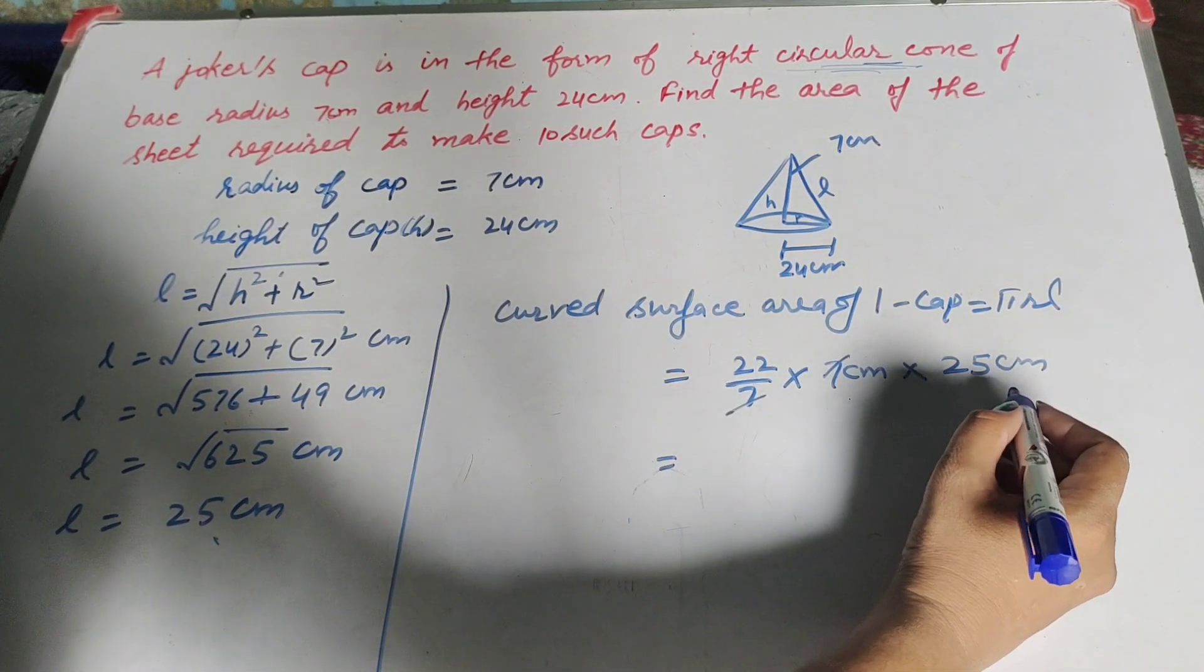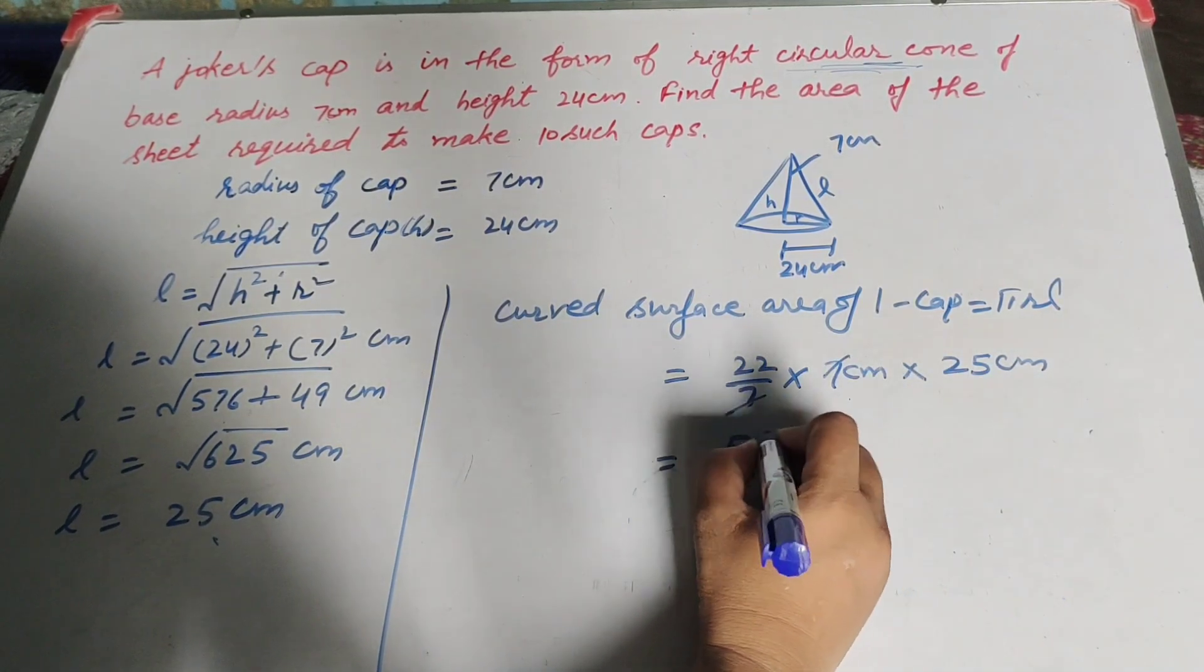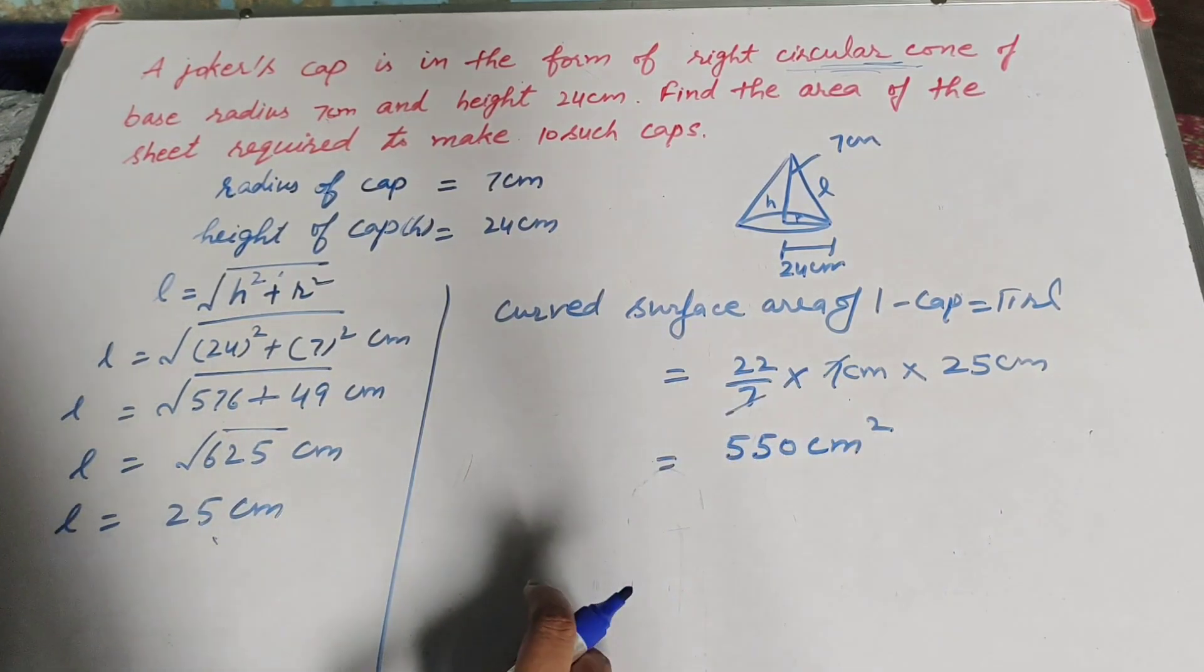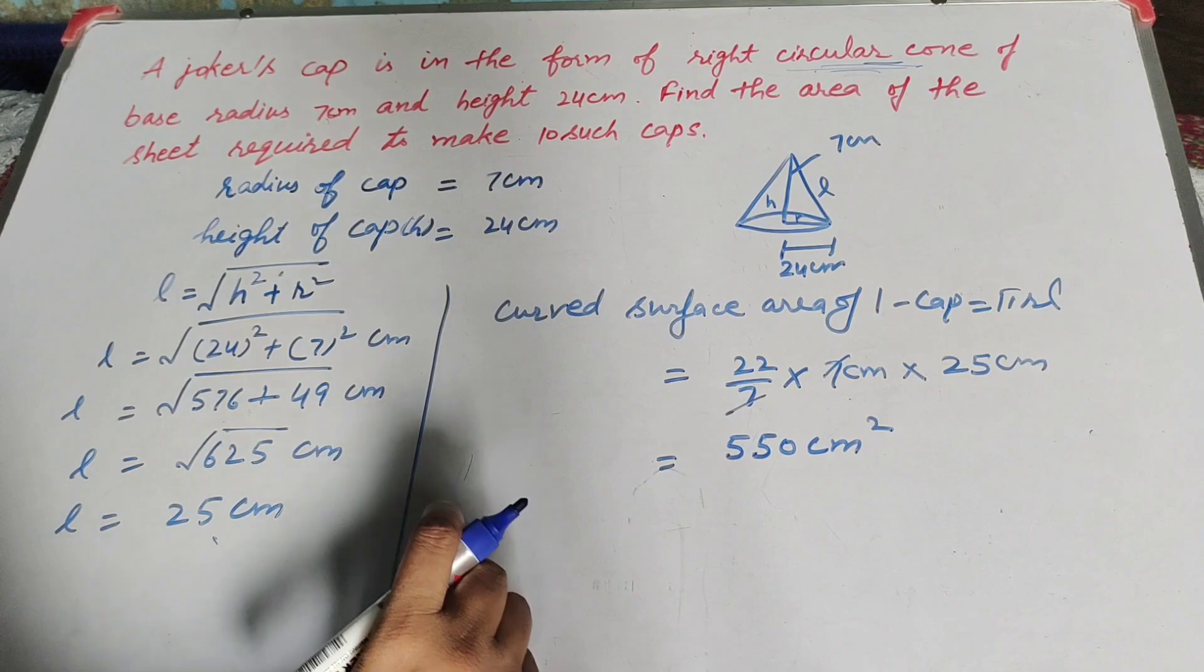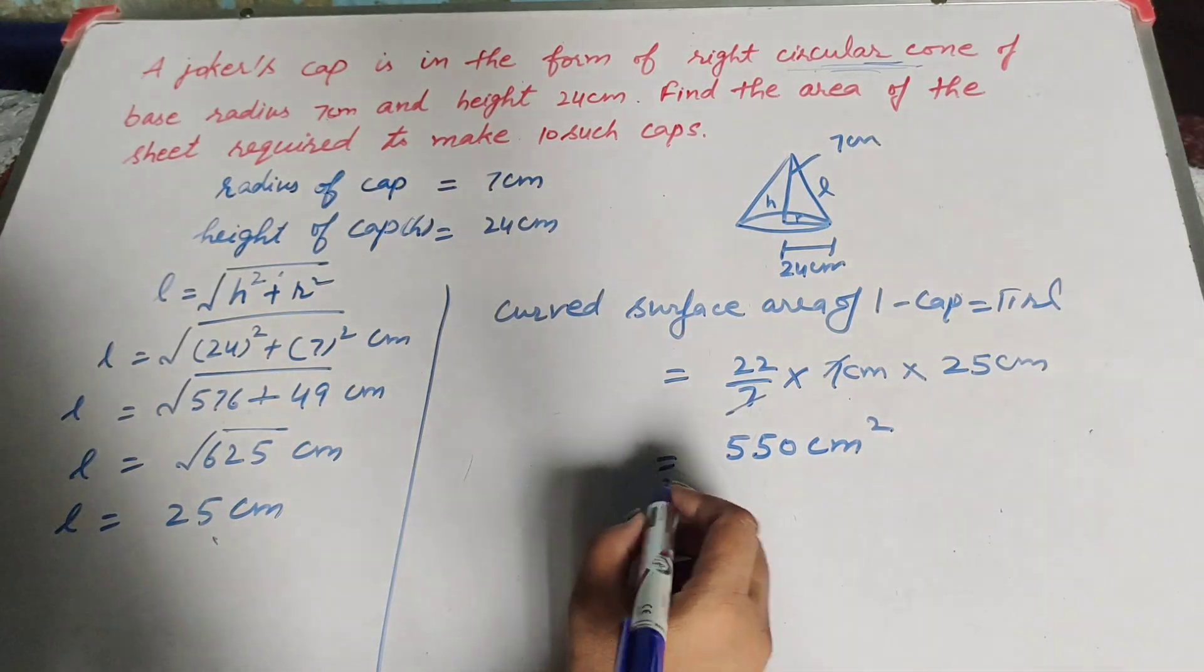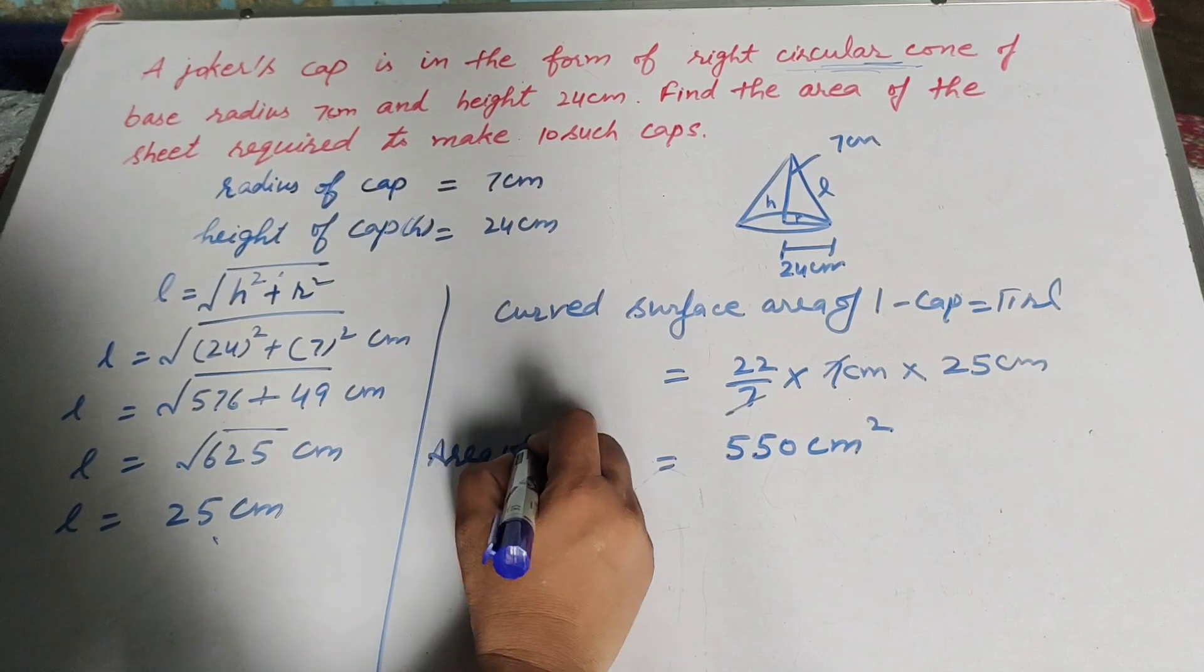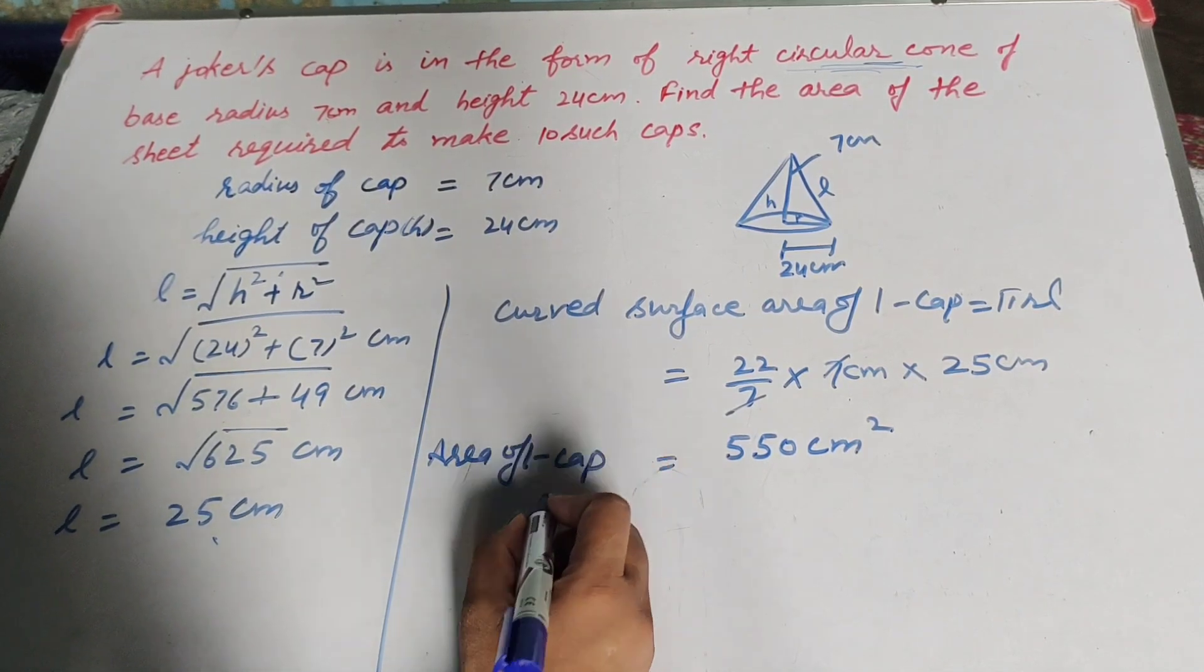22 times 25, we get answer 550 cm square. This is the area of 1 cap. Now we find area of 10 such caps.